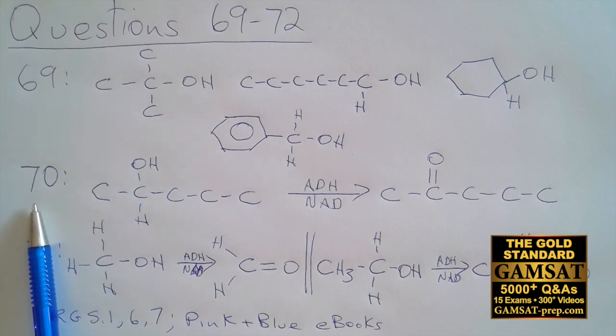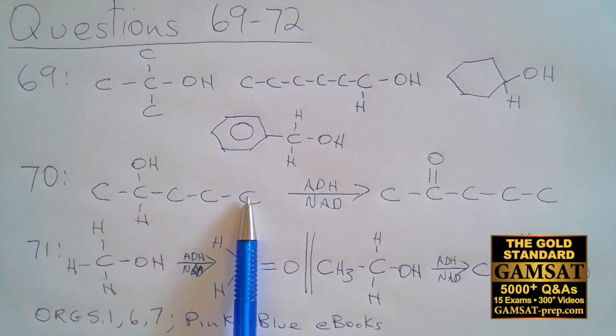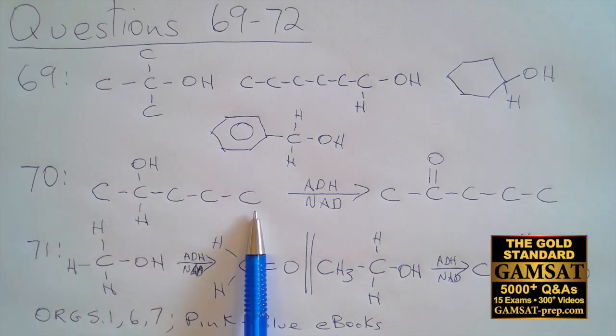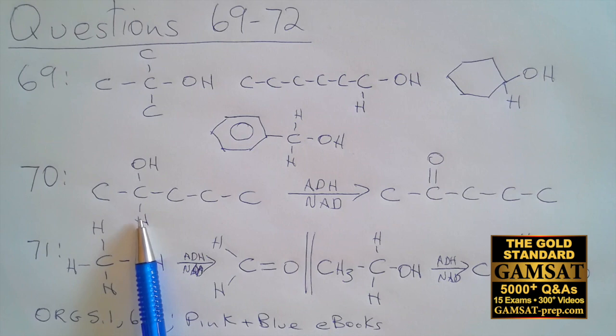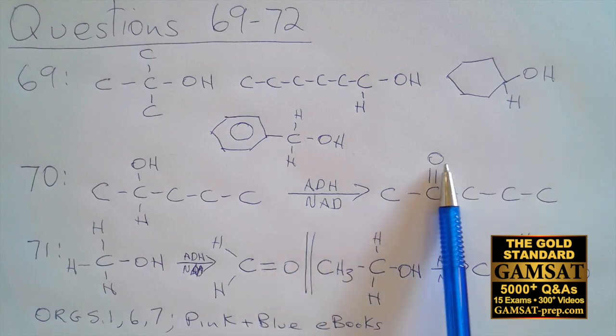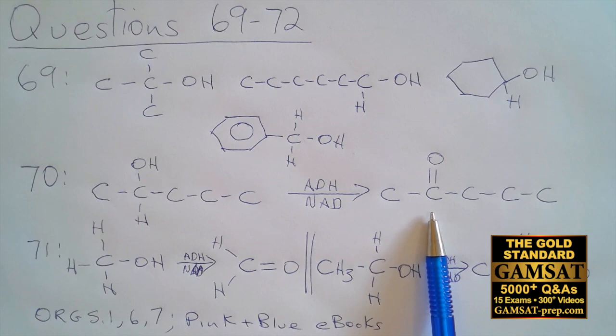Question 70 starts with 2-pentanol. One, two, three, four, five carbons means pent, -ol means there's an alcohol group, and it's on the second carbon. The rest are going to be hydrogens, so there's a hydrogen here available to be oxidized. With ADH and NAD we oxidize—hydrogen removed from the OH group, hydrogen removed from the carbon—and so we have a ketone.